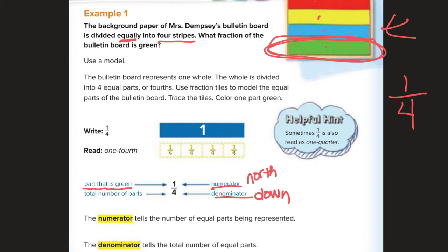And over here, too, it says the part that is the green, the part that we're talking about, the part that's shaded, the part that we ate, right? That's our numerator. And then the denominator always talks about the total number of parts. How many total pieces was the pizza cut into?